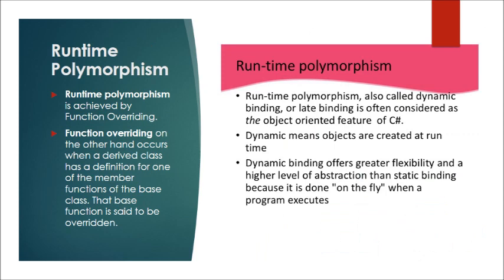Runtime polymorphism is achieved by function overriding. Function overriding occurs when a derived class has a definition for one of the member functions of the base class. That base function is said to be overridden.